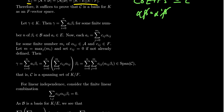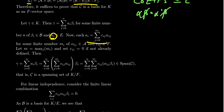Since B is an E-basis for K, every element γ can be written as a linear combination of the β's, with coefficients coming from E. But A is a basis for E over F, so each of those coefficients aᵢ can be written uniquely as a linear combination: aᵢ = Σⱼ cᵢⱼ αᵢⱼ, where the coefficients cᵢⱼ come from the base field F and the αᵢⱼ belong to the set A.